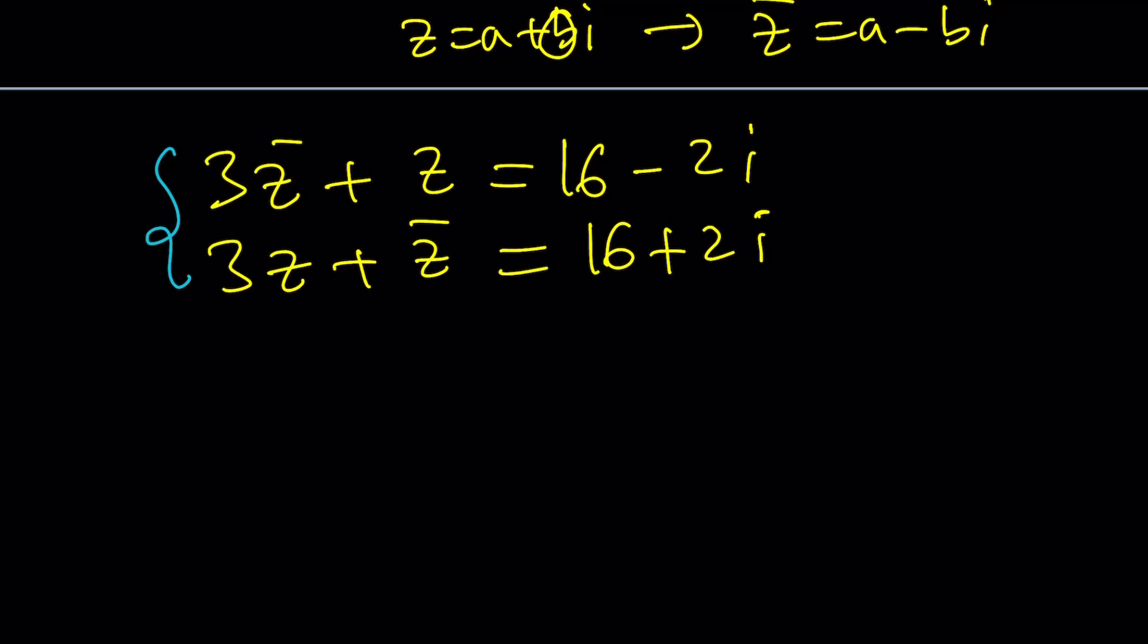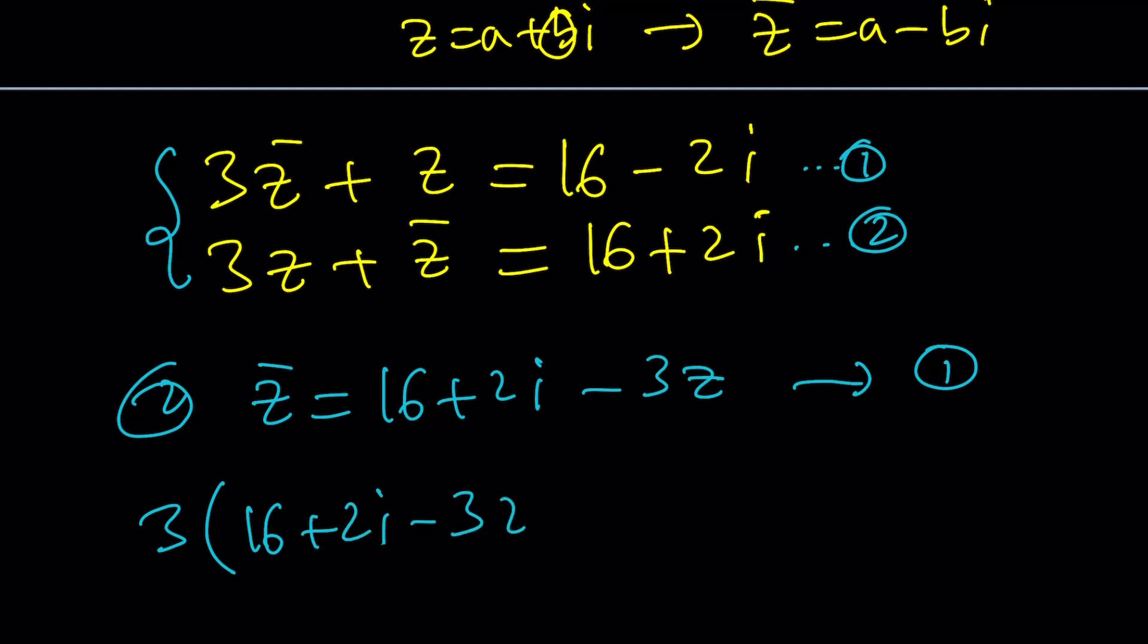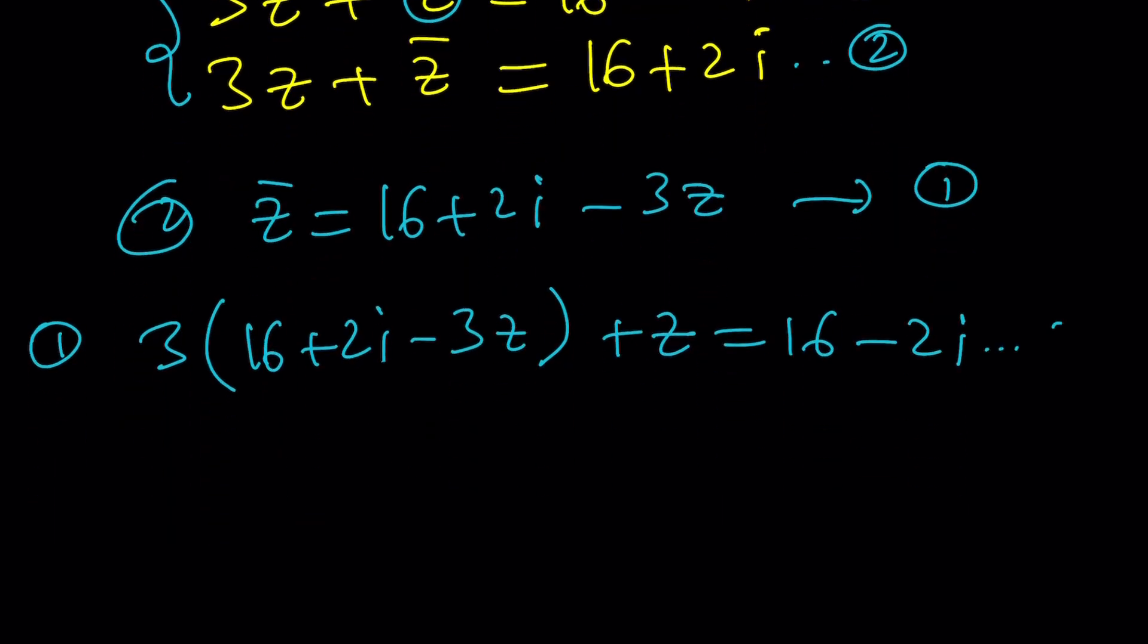But let's go ahead and use substitution because I think we used elimination before. So this is the first equation, this is the second equation. From the second one let's isolate z bar, write it as 16 plus 2i minus 3z and then plug it into the first one. What is the first one? 3 times z bar, I'm going to replace z bar with 16 plus 2i minus 3z and then plus z equals 16 minus 2i.